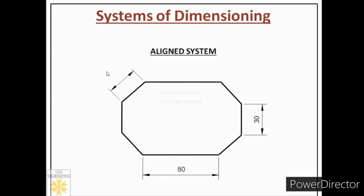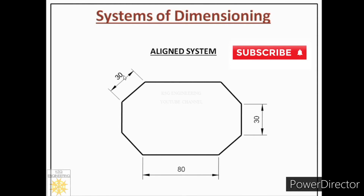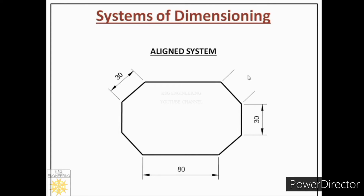For this inclined line, the dimension is placed on this side of the dimension line, because only on this side can we read the dimension and satisfy the two rules: above the line and at the middle. If we place the dimension on the other side, that would be called below the line, which is not correct. So we must place the dimension above the line. Let us see more examples for inclined dimensioning.